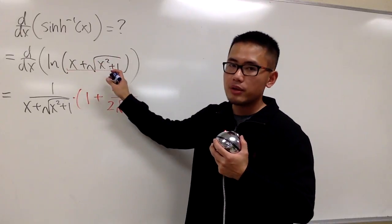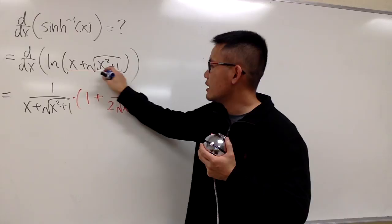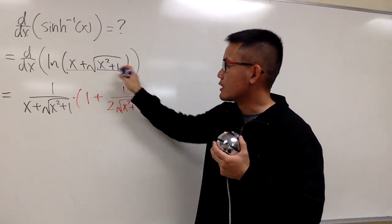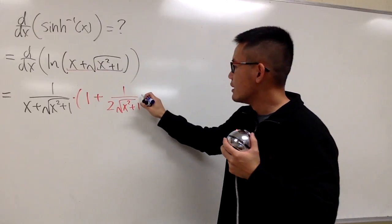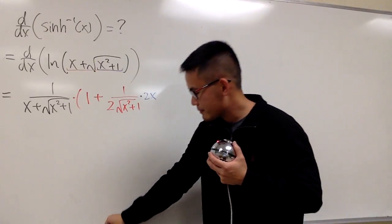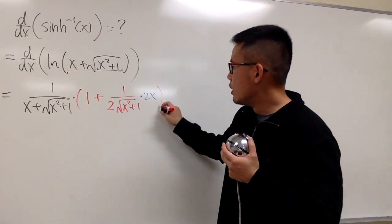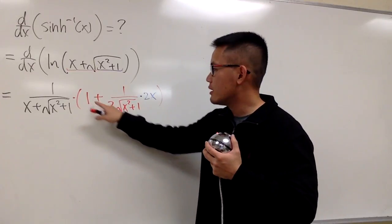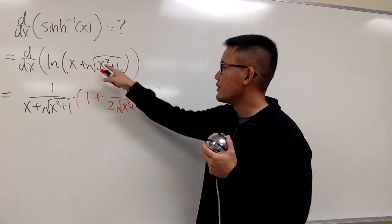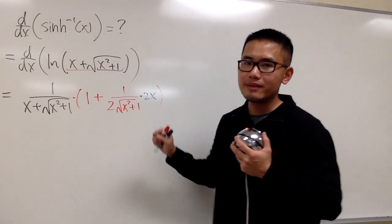However, in terms of this part right here, we have to do the chain rule once again. We have to ask ourselves, what's the derivative of x squared plus 1? It's just 2x. So I have to multiply by 2x right next to this term only. So once again, altogether, the 1 is the derivative of x, and this right here is the derivative of square root of x squared plus 1. And you see that the 2 and 2 cancel, and this is what we have at the moment.